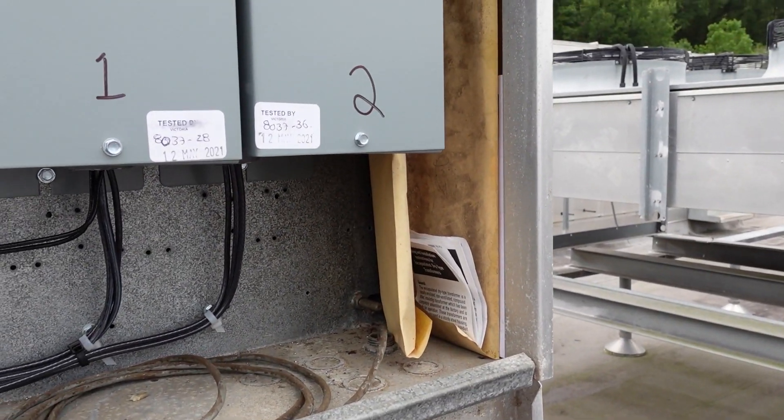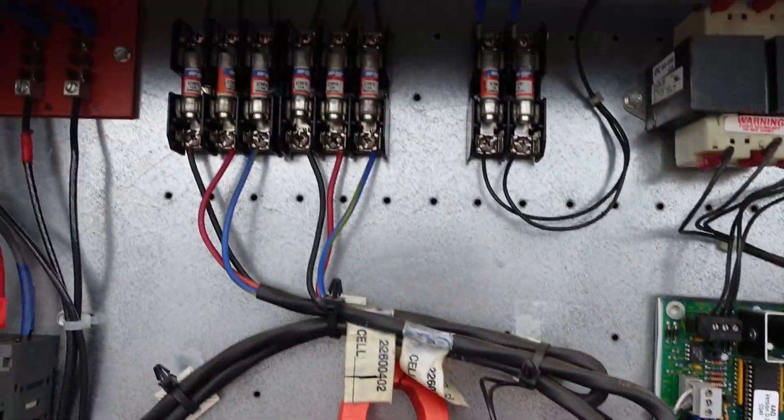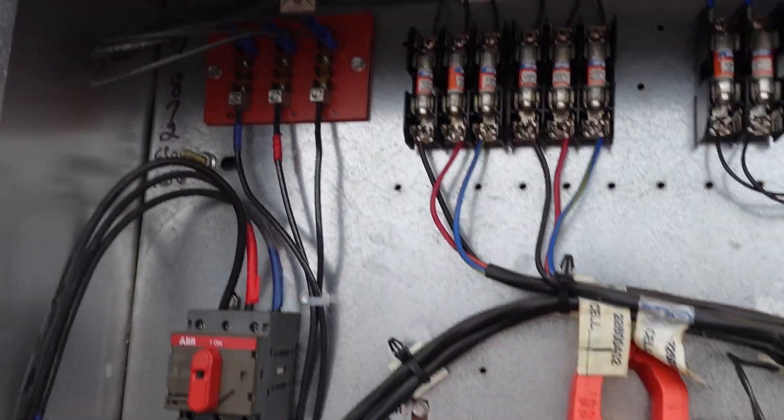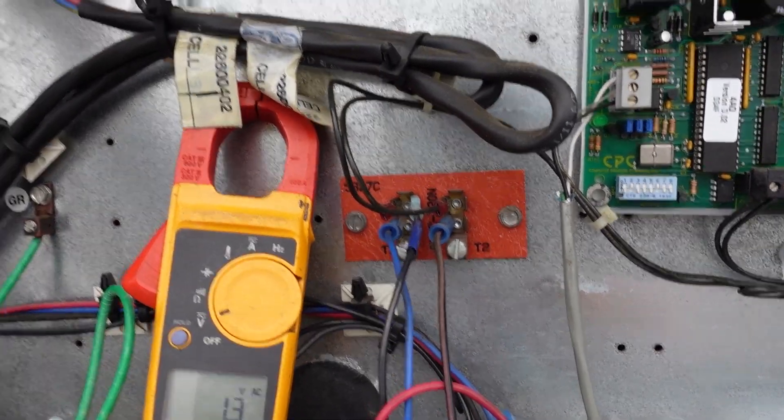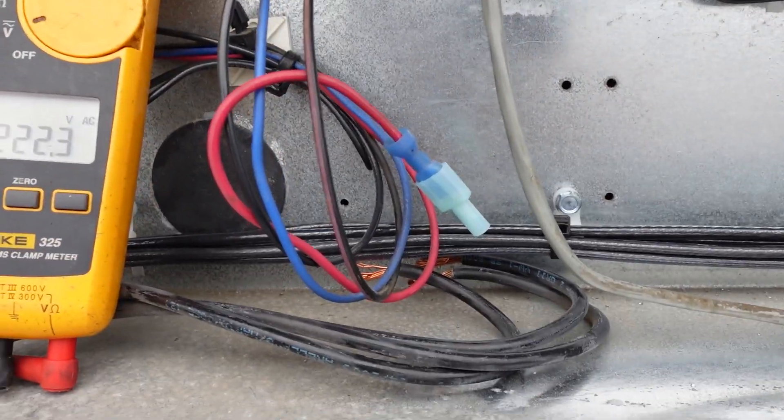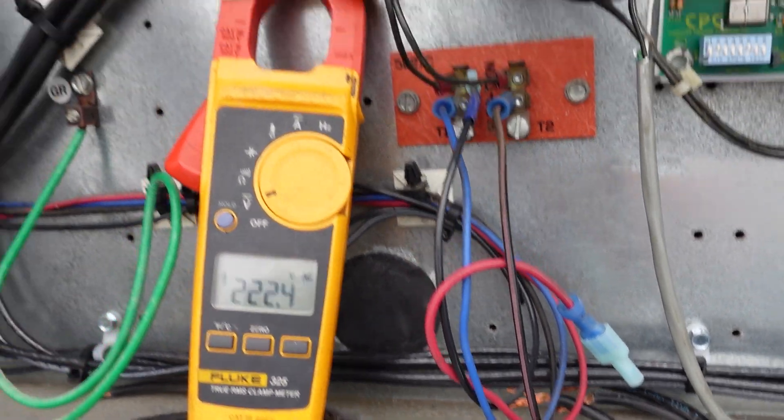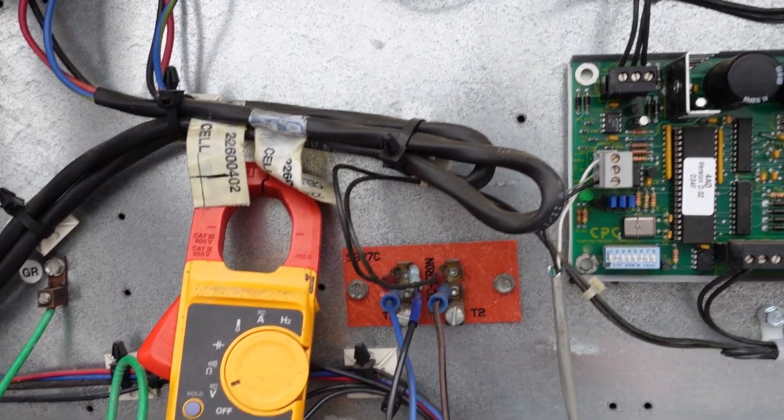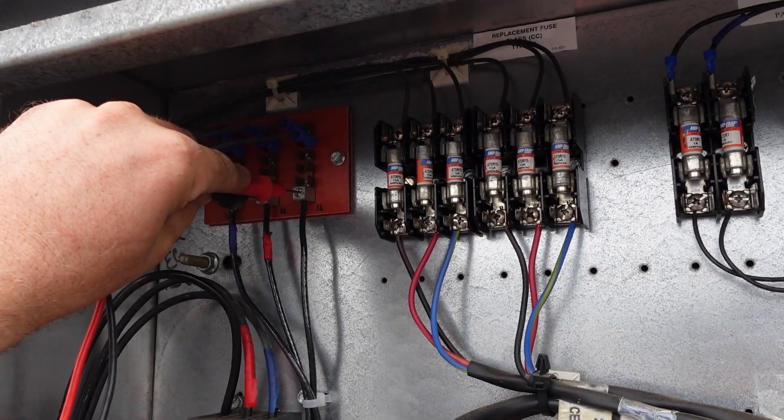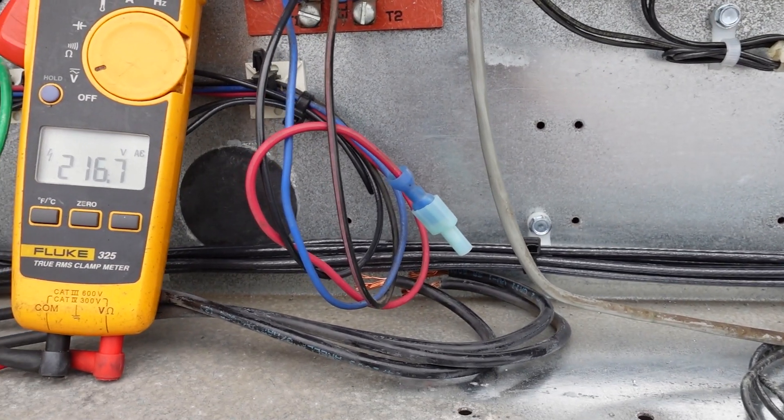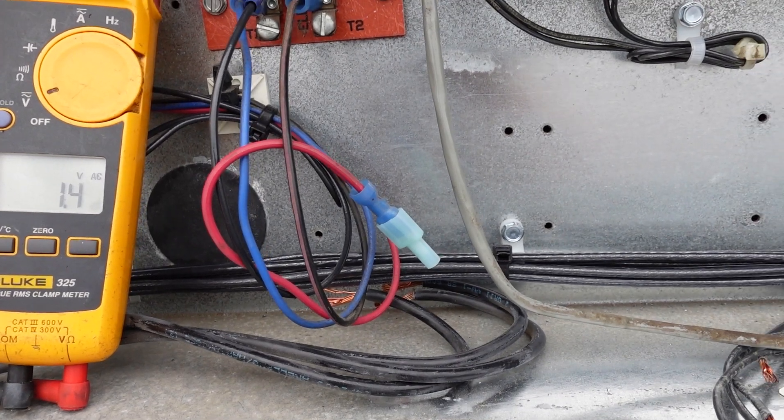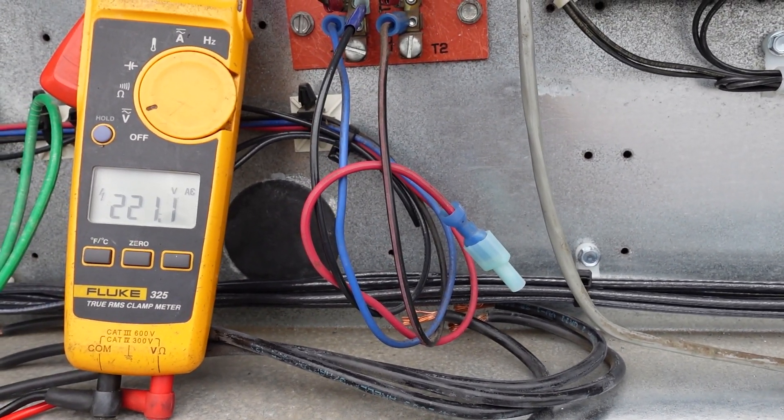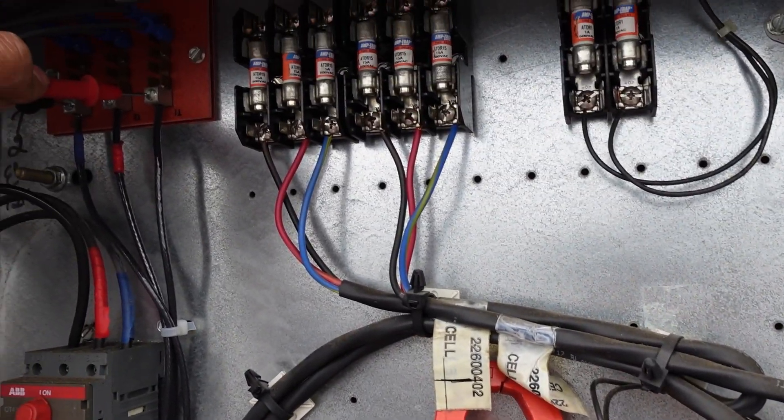That goes into our transformers and it comes out on our terminal board top left. So now if you look at the meter again, we're going to do one to two up there. You can see we have 222 volts. Two to three, 217, 221 from one to three.